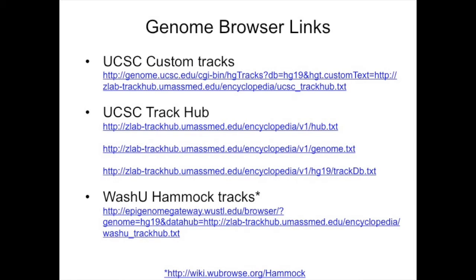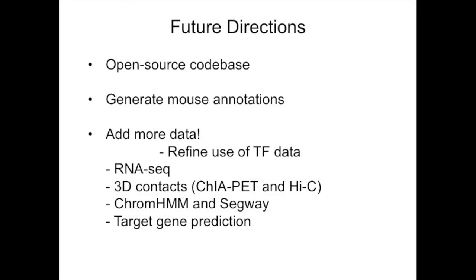Those genome browser links are available for your own reference. These are some future directions of the project: Michael is hoping to make this whole project open source and is currently working on generating mouse annotations, so if you use mice as a model organism you can use an analogous encyclopedia created the same way as the human one. We also want to refine our use of transcription factor data, incorporate other data such as RNA-seq and 3D contact data like ChIA-PET and Hi-C, and use tools such as ChromeHMM and Segway to further define and annotate our encyclopedia.